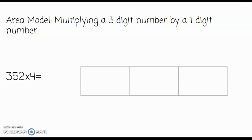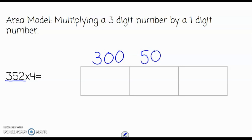So we have the number 352 times 4, and because 352 has three place values, I have created an area model with three parts. In each part we're going to do the partial products of 352, which is 300 plus 50 plus 2.